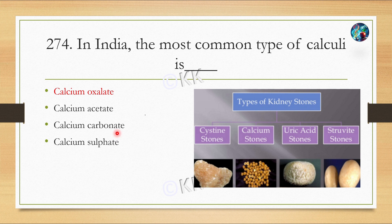There are generally four types of kidney stones: Cystine stones, Calcium stones, Uric acid stones, and Struvite stones. Calcium stones are the most common. Let's move to our next question.